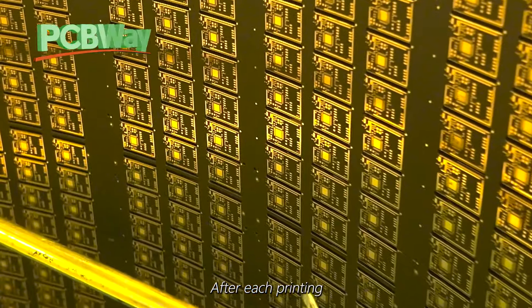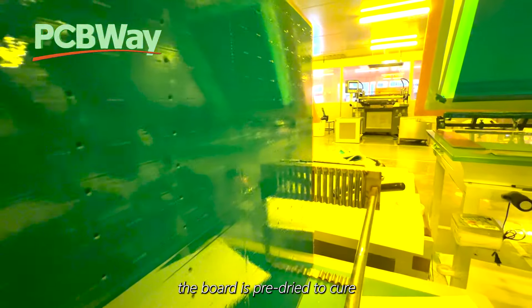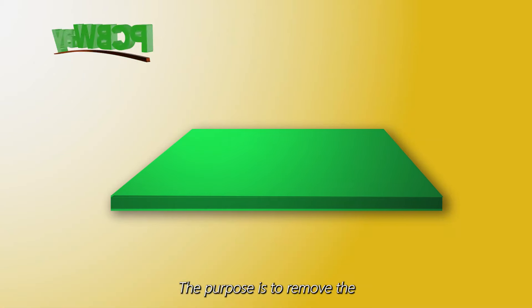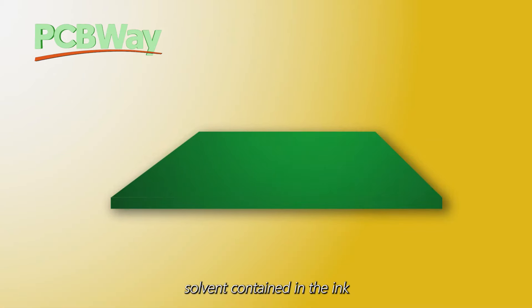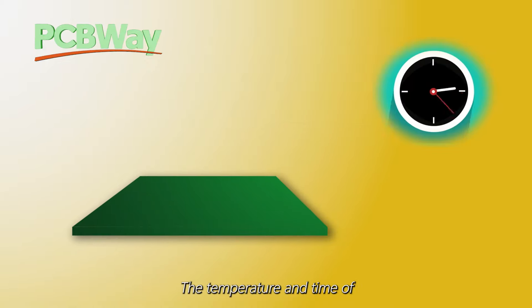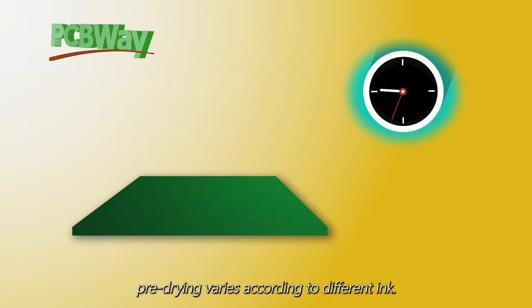After each printing, the board is pre-dried to cure the solder mask ink. The purpose is to remove the solvent contained in the ink so as to make the ink non-stick. The temperature and time of pre-drying varies according to different ink.